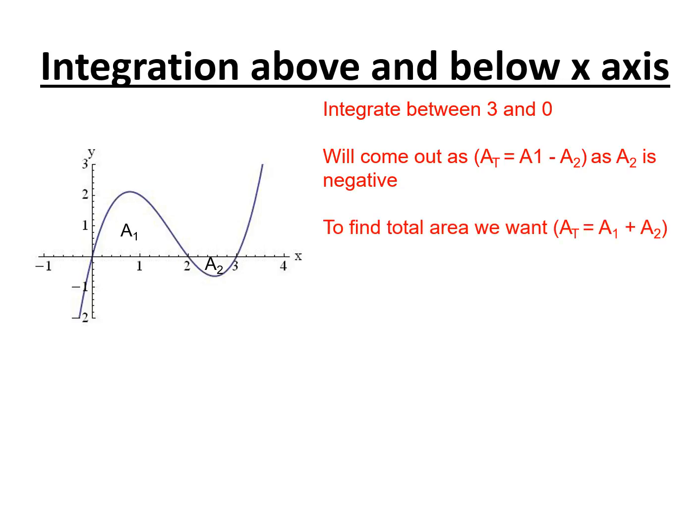So to find the total area, if it tells us find the total area under the curve, then we want to add the two areas together instead. To do that you have to break down the curve into its two sections between zero and two and between two and three.